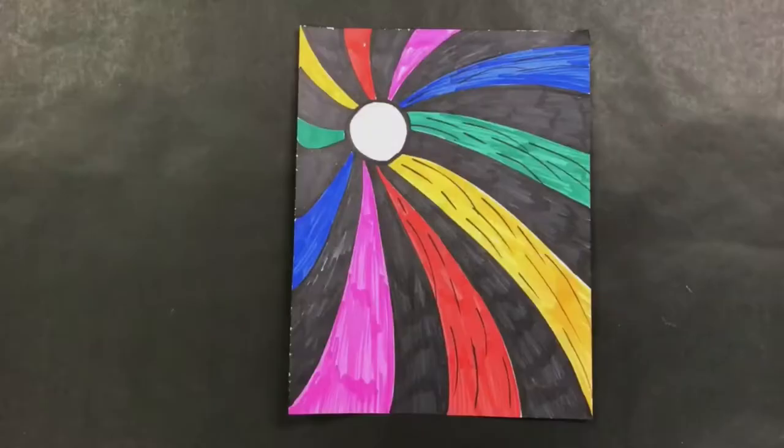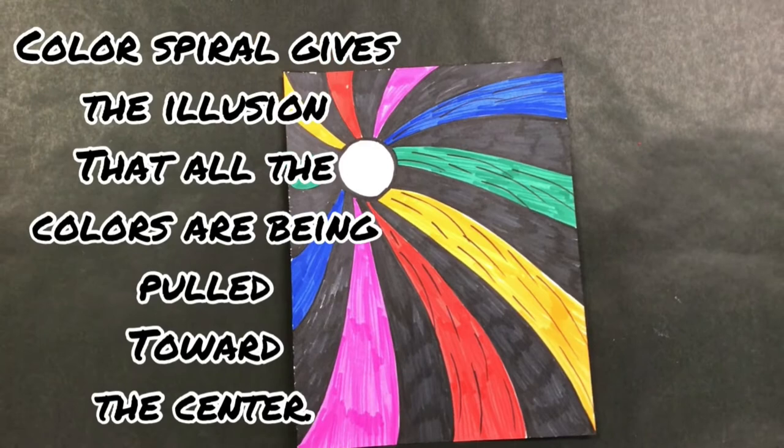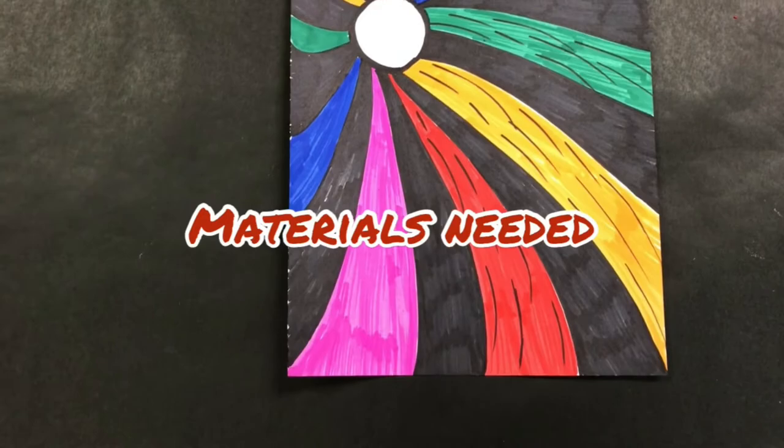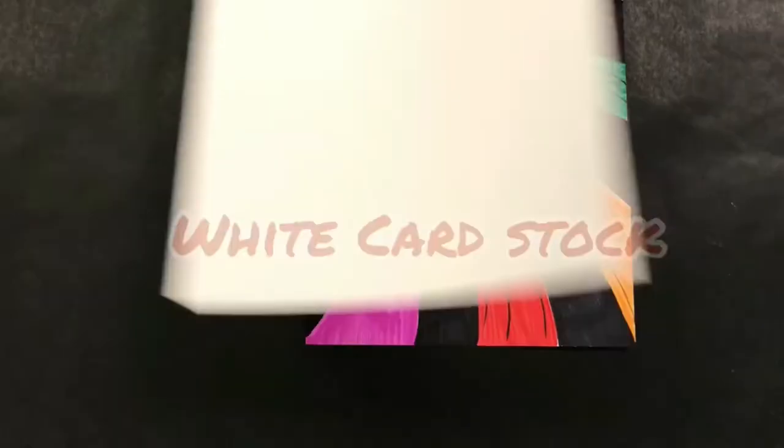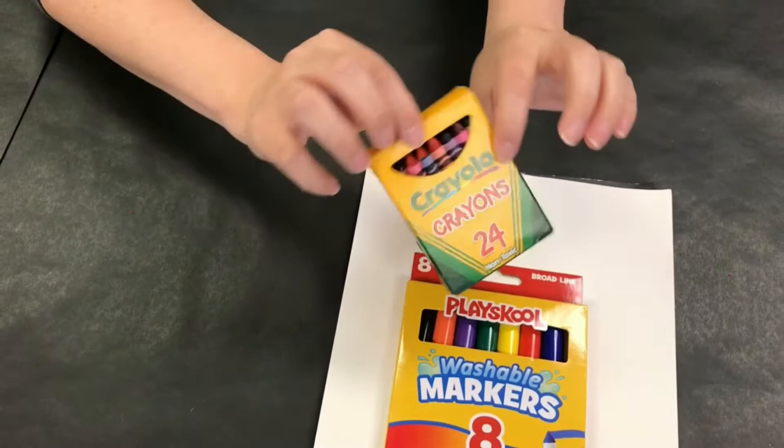Today we will be working on three artworks inspired by the famous artist Vincent Van Gogh's Starry Night. Van Gogh was famous for his ability to capture movement in his artwork. Movement is how the eye moves through the composition, leading the viewer's attention from one aspect of work to another. It can create the illusion of action. For our first activity, we're going to be making a color spiral. A color spiral gives us the illusion that all the colors are being pulled towards the center. The materials we're going to need are cardstock, markers, crayons, a pencil, and an eraser.